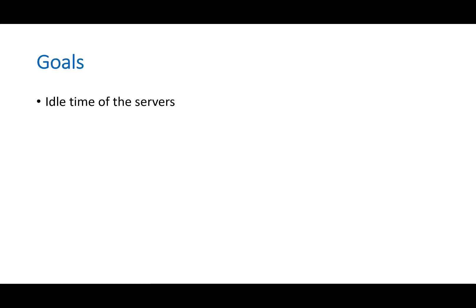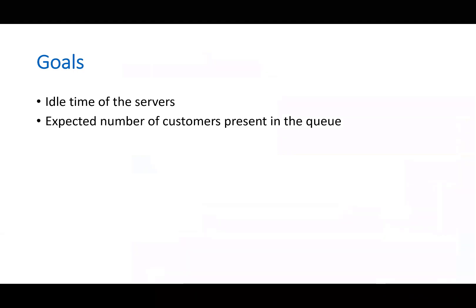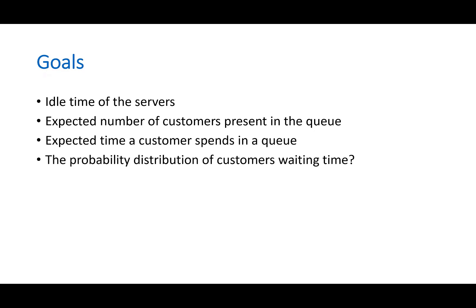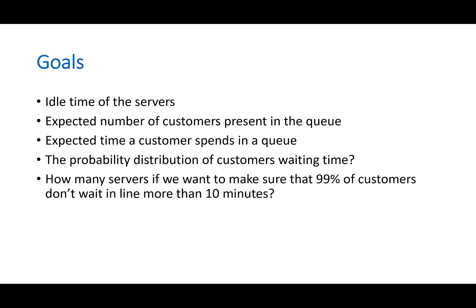Now we get into more depth. After we model and study a queuing system, we are trying to find: the time that servers aren't busy; the expected number of customers present in the queue so that you can accommodate them; the expected time a customer spends in the queue so that you can inform them; the probability distribution of customers' waiting time; and how many servers we want — for example, to ensure that 99% of customers do not wait in line more than 10 minutes.